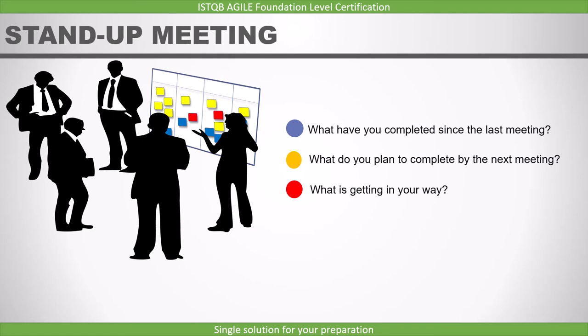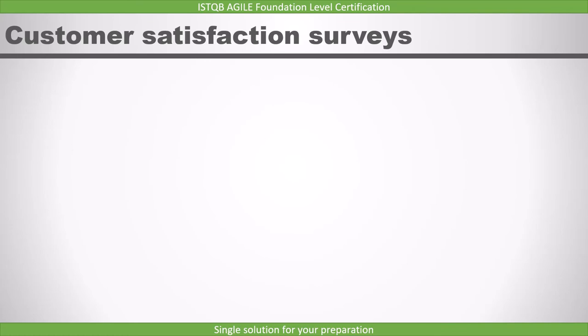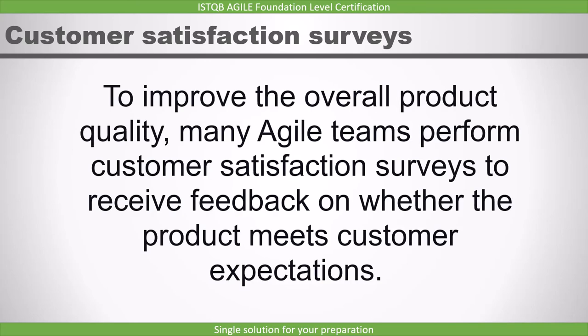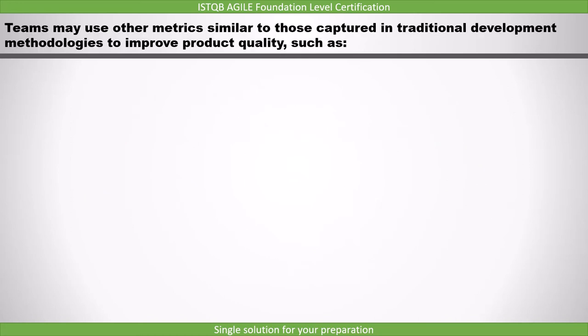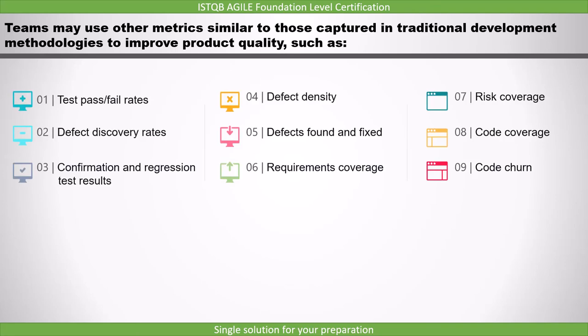The last topic is customer satisfaction surveys. To improve the overall product quality, many Agile teams perform customer satisfaction surveys to receive feedback on whether the product meets customer expectations. Teams may use other metrics similar to those captured in traditional development methodologies to improve product quality, such as test pass or fail rates, defect discovery rates, confirmation and regression test results, defect density, defects found and fixed, requirements coverage, risk coverage, code coverage, and code churn.